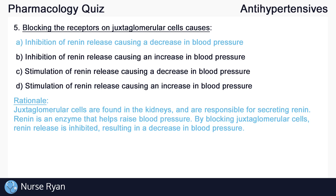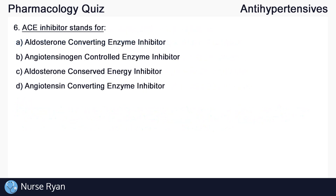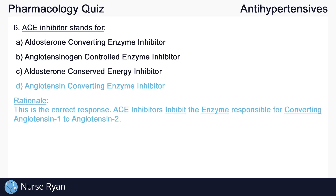For more information about renin, I'll link my video on the renin-angiotensin-aldosterone system in the video description. Question number six: ACE inhibitor stands for... The answer here is angiotensin converting enzyme inhibitor. ACE inhibitors inhibit the enzyme responsible for converting angiotensin 1 to angiotensin 2.